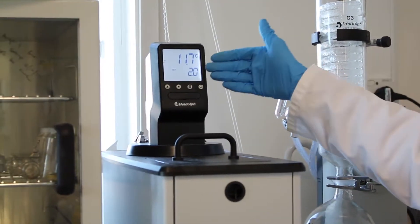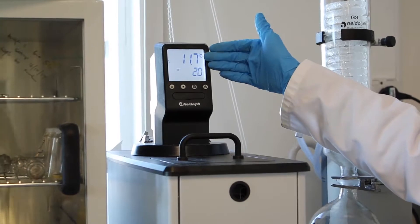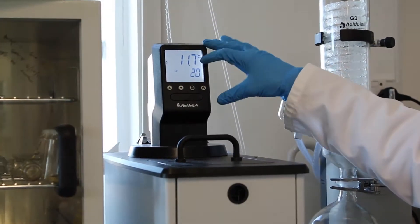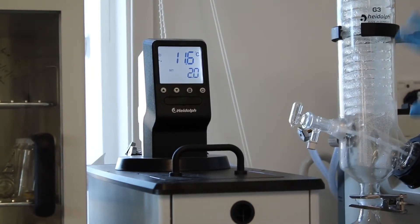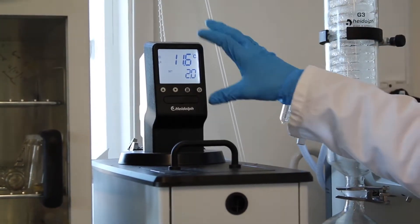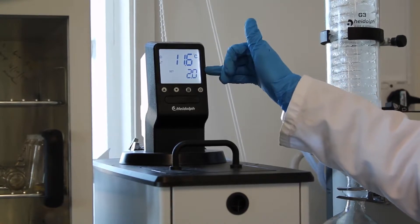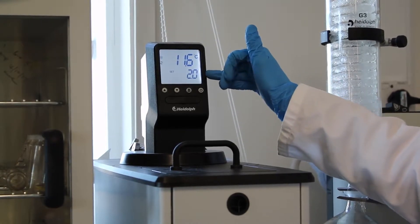Now the chiller is set at 2 degrees and the temperature of the bath, of the liquid inside is now 11. Before using the instrument, we need to wait for the temperature to drop to around 2 degrees.